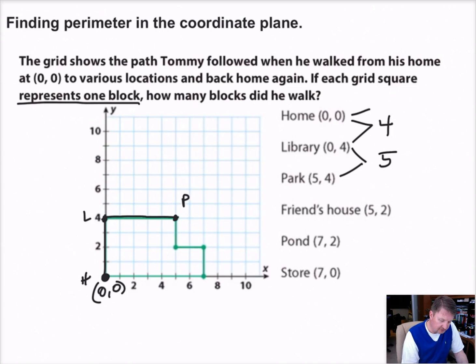Then he went from the park to a friend's house. I'm going to believe that's going to be the friend's house. We're going to label that F. That's at 5, 2, which is what that is. And that's 1, 2 blocks away. So from here to here, he walked two blocks. Then he went to the pond at 7, 2. So 7 and then up to 2. This is the pond. We'll call this PO. And he walked two blocks there. So from the friend's house to the pond, he walked two blocks. Then he went to the store at 7, 0. That would be an S. That's what that is. And that is two more blocks. So from the pond to the store, it's two blocks.